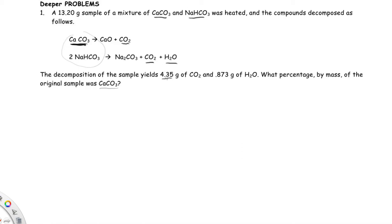If we start with 4.35 grams of CO2, I don't know how much of the CO2 came from the sodium bicarbonate or how much came from calcium carbonate, so I cannot start with CO2. You will notice that in this second equation, water is produced and we are given the amount of water, but water is only produced in this second equation.